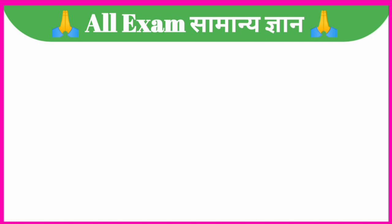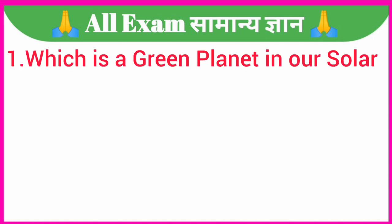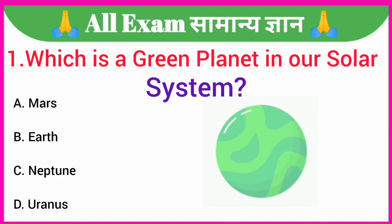Your first question is: which is a green planet in our solar system? A. Mars, B. Earth, C. Neptune, D. Uranus. Your correct answer is option D. Uranus.